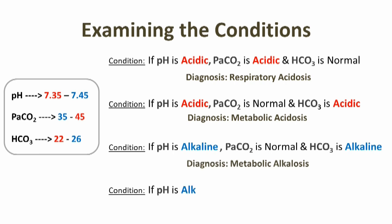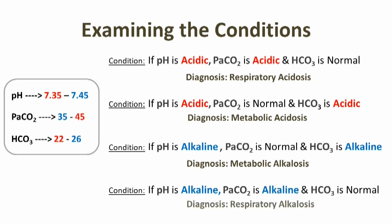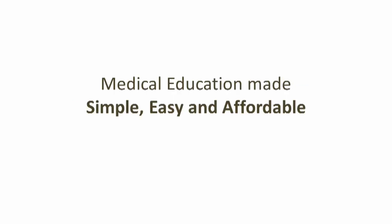Condition number four: if pH is alkaline, PaCO2 is alkaline, and HCO3 is normal, then it indicates respiratory alkalosis. Because PaCO2 means respiration and pH is alkaline, therefore respiratory alkalosis.